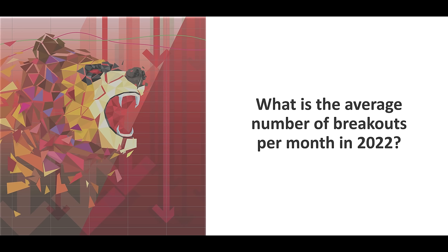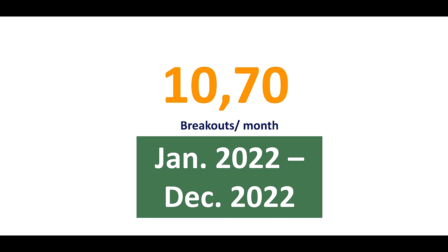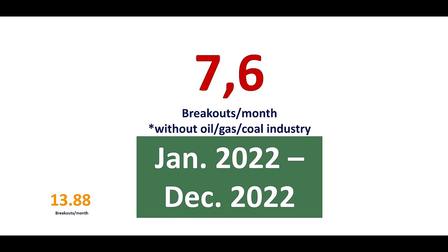In 2022, the bearish environment produced 10.7 breakouts per month. However, looking closely at the data, I saw a lot of oil, gas, and coal stocks having breakouts. Considering 2022's energy context and geopolitical environment, I decided to remove them, which brought the number down to 7.6 breakouts per month — a much lower number in a bearish environment, which makes sense compared to 13.88 in prior years.